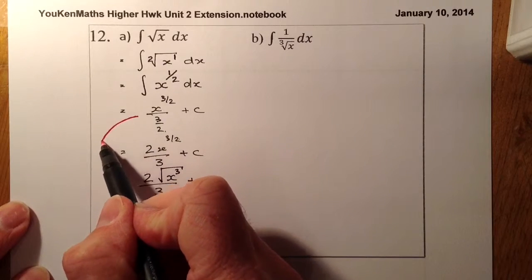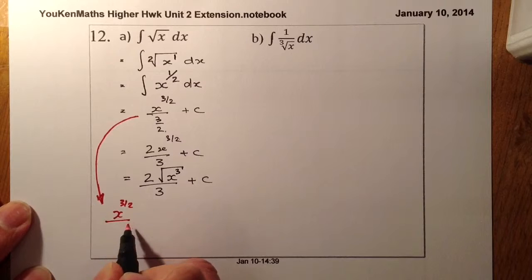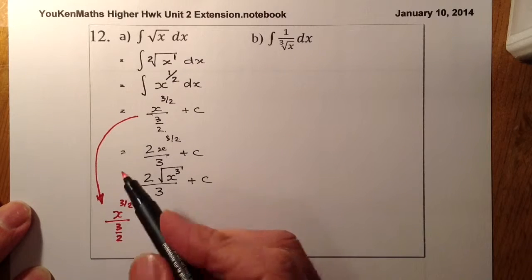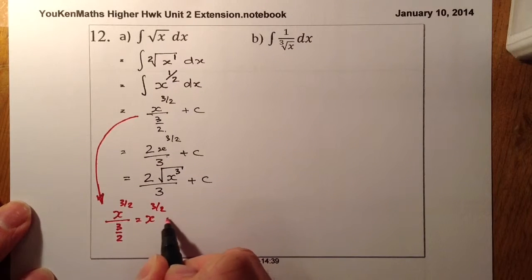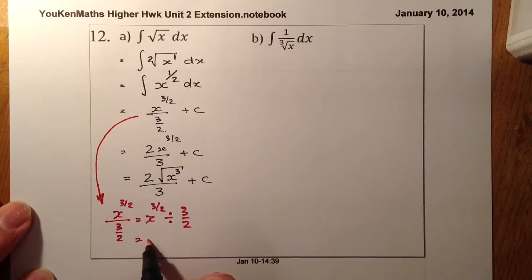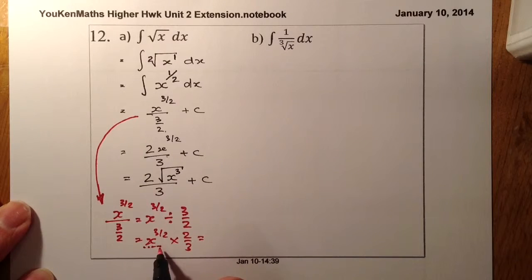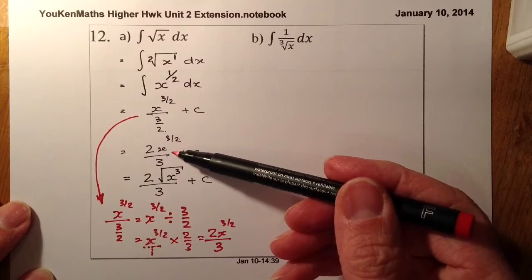Let me show you how this part works out — how I get from one line to the next. What I have is X to the power of 3 upon 2 divided by 3 over 2. Written out in a normal way, I'm dividing that by 3 over 2. Remember when we're dividing by fractions, we flip and multiply the last fraction. So that becomes 2 over 3, and multiplying straight across — with a 1 under the X — gives me 2X to the 3 over 2 all over 3. That's what gives me that answer.